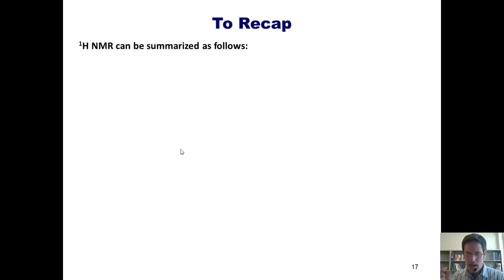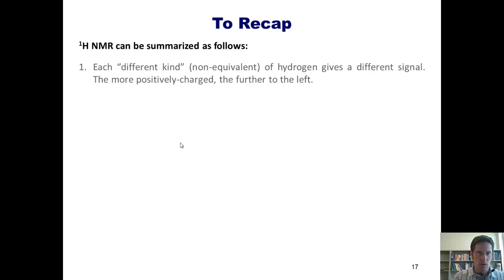So hydrogen NMR can be summarized as follows. 1. Each different kind or non-equivalent hydrogen gives a different signal. The more positively charged, the further to the left.